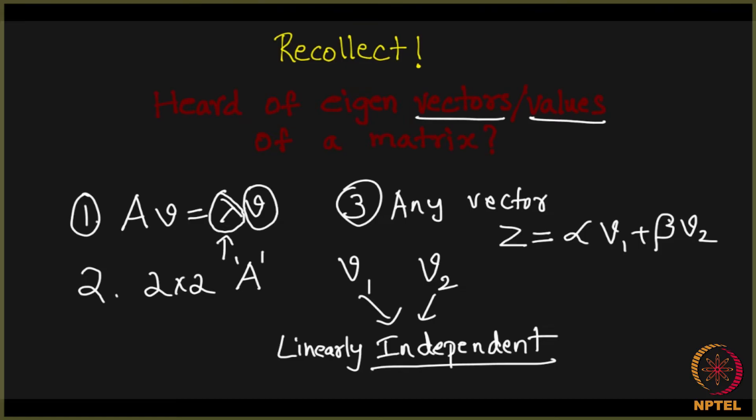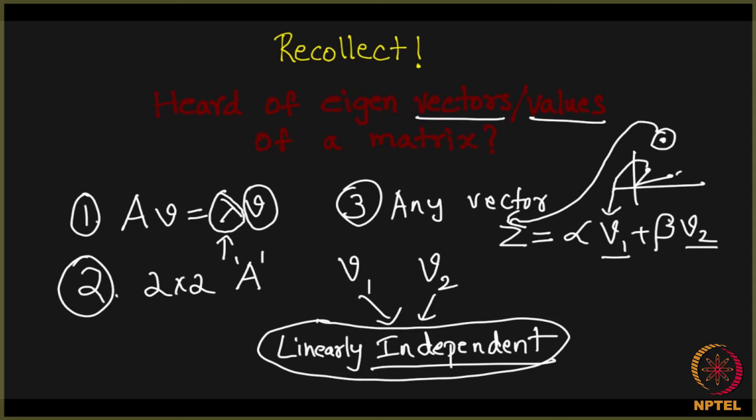So this is the third one. First one is the definition of eigenvalues and eigenvectors. Second one is given a 2 by 2 matrix, there are always 2 eigenvectors and they are actually linearly independent. What do you mean by linearly independent? Two vectors that are linearly independent in R2 - given any point in R2, that point can be written as the linear combination of these two eigenvectors. So this point Z, you can always write Z as alpha times V1 and beta times V2. These are the basics of matrix theory. I am sure all of you are familiar, if not please take a pause and take a look at it. You need not know the reasoning behind all these things, you just need to recollect these things, that should be enough.